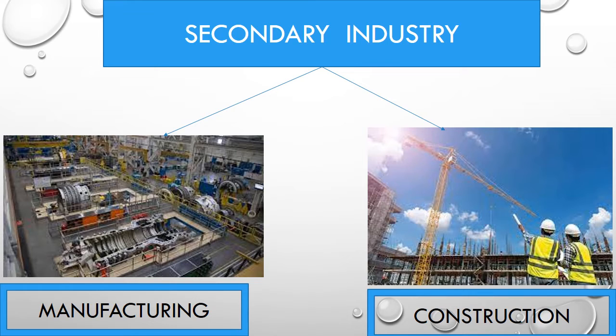Secondary industry, as we have already discussed, involves processing materials that were extracted at the primary stage. Primary state we have extracted the material, further processing happens in secondary industry.